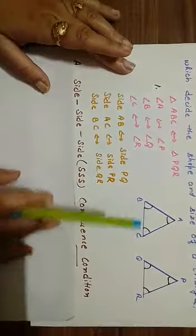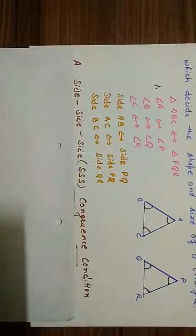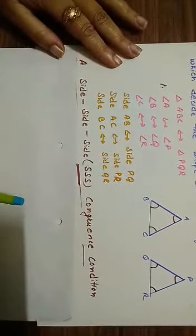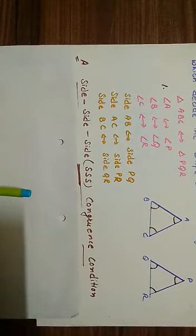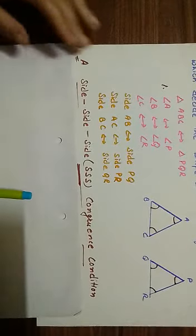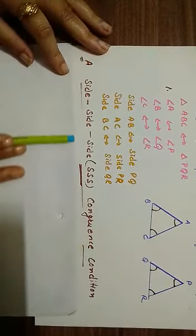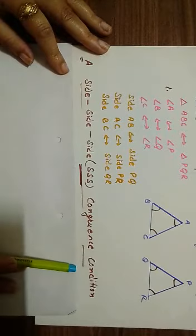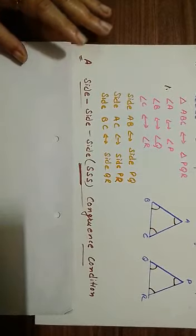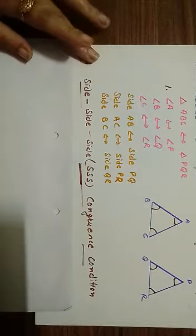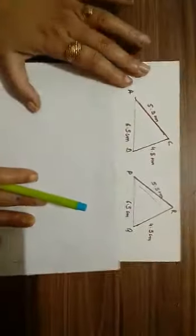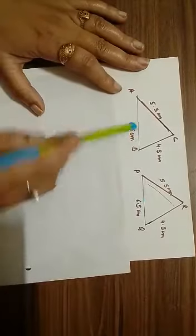On the basis of these six elements, we have four congruence conditions. The first is side-side-side congruence condition, also called SSS congruence condition. Let us make two triangles.